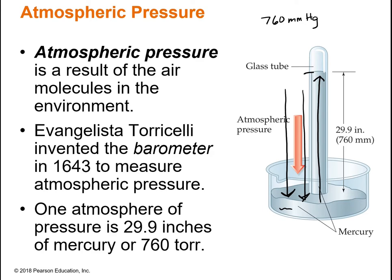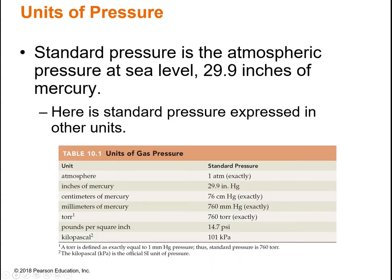You'll see millimeters of mercury as a unit of pressure—you're literally reading the height of mercury in the glass tube in millimeters. You'll also see other units. The main ones we'll use in this class are millimeters of mercury, atmospheres, and torr. 760 millimeters of mercury equals one atmosphere. I'll give you an example using some other units, but those three are what we'll primarily stick to.